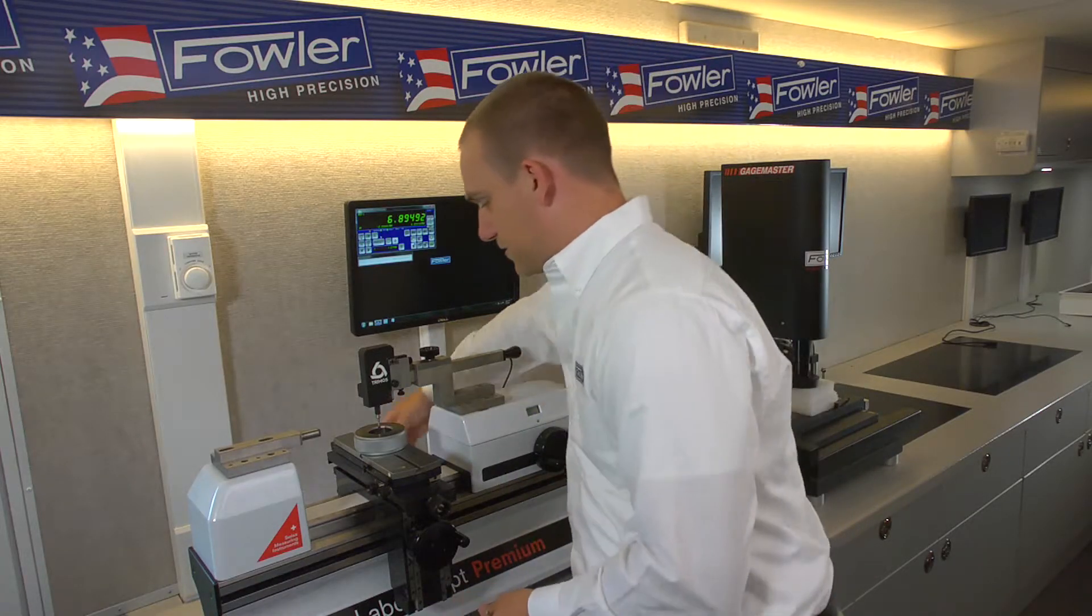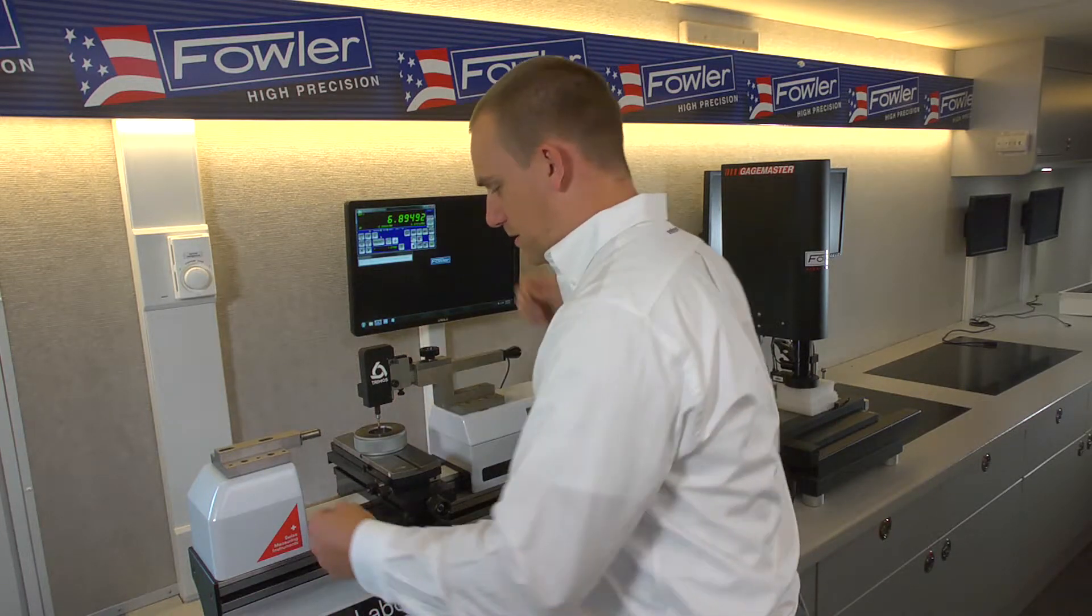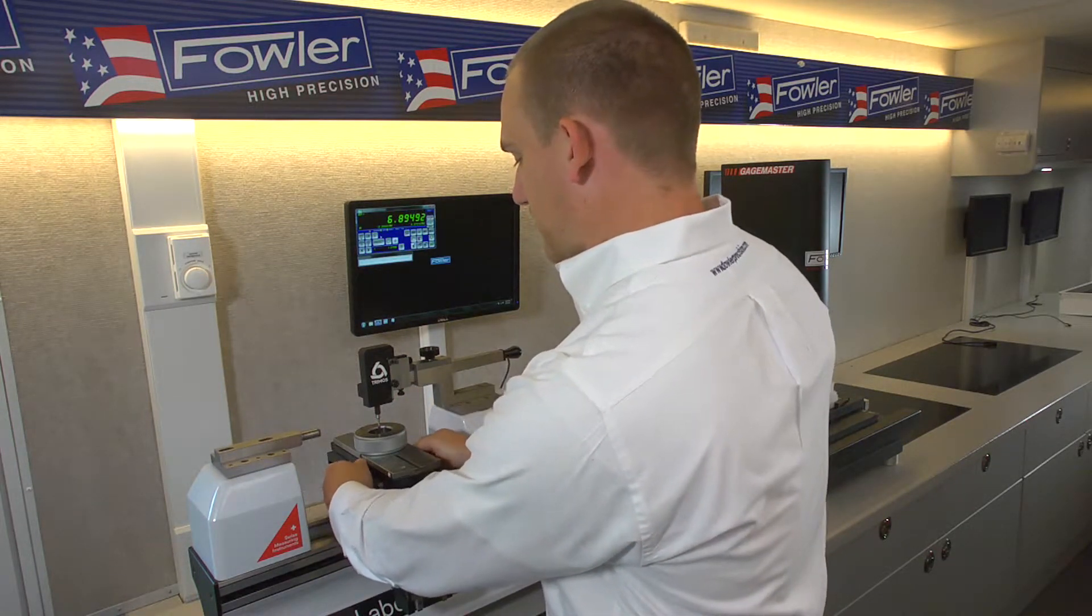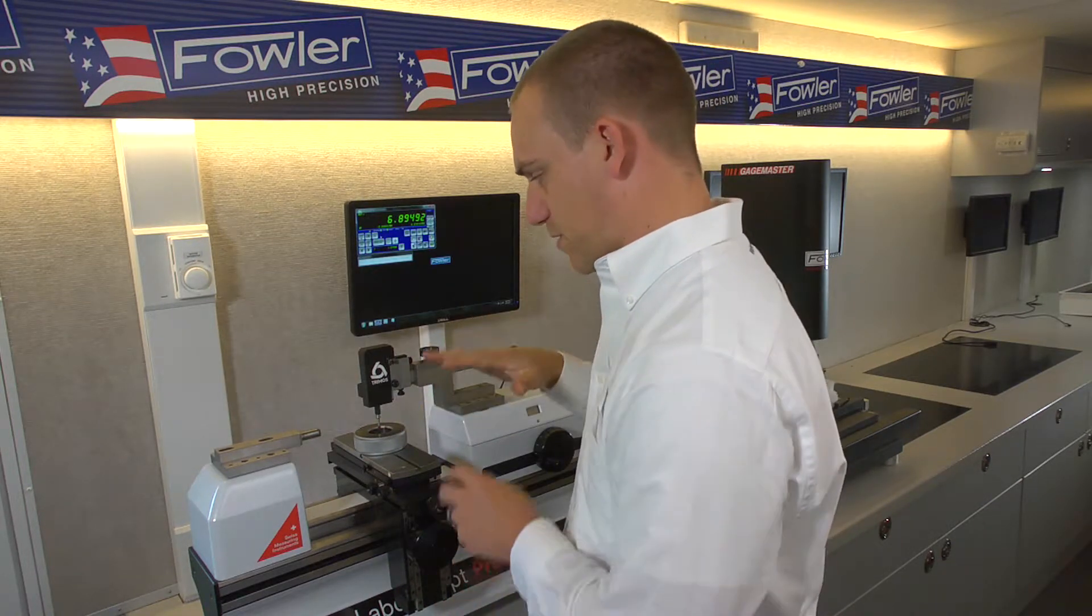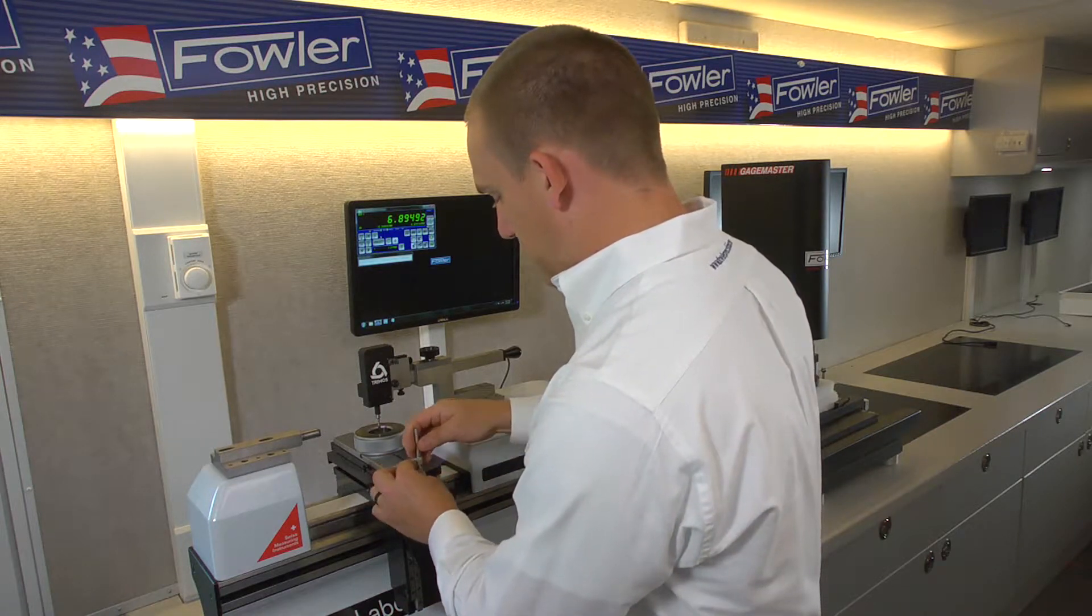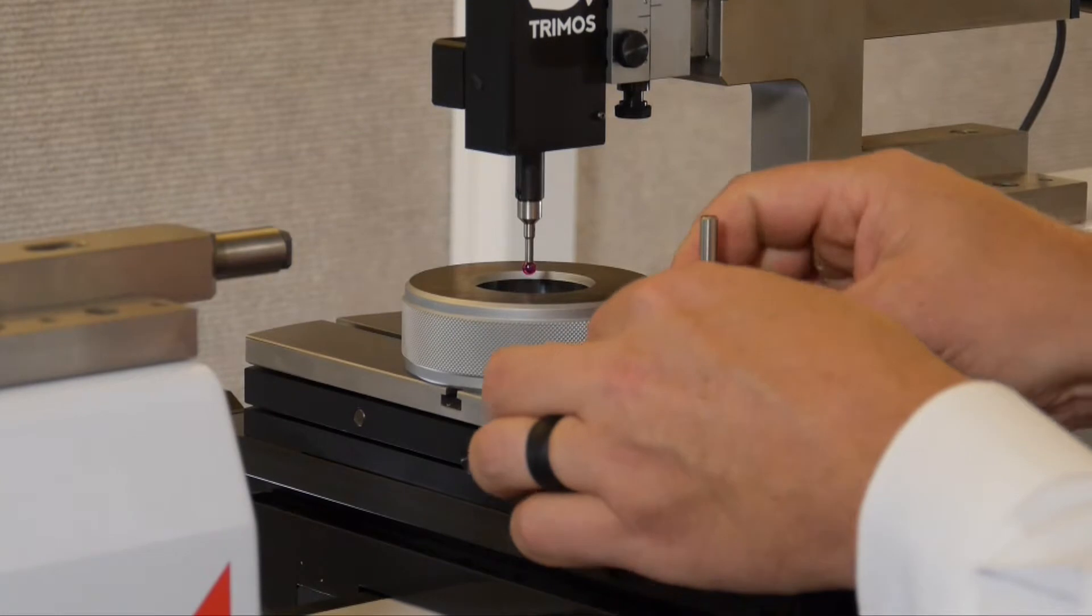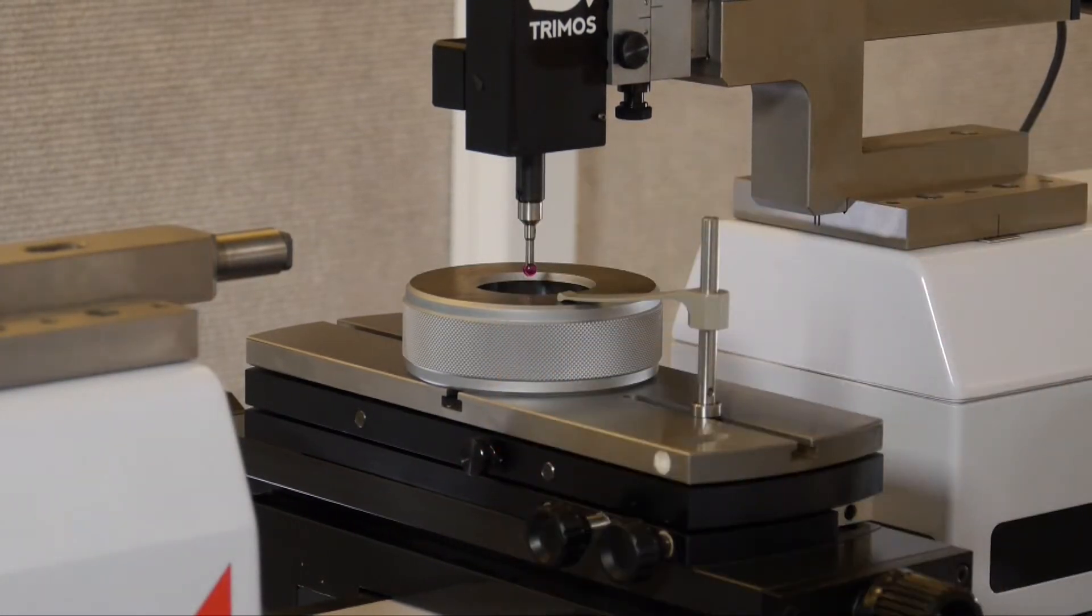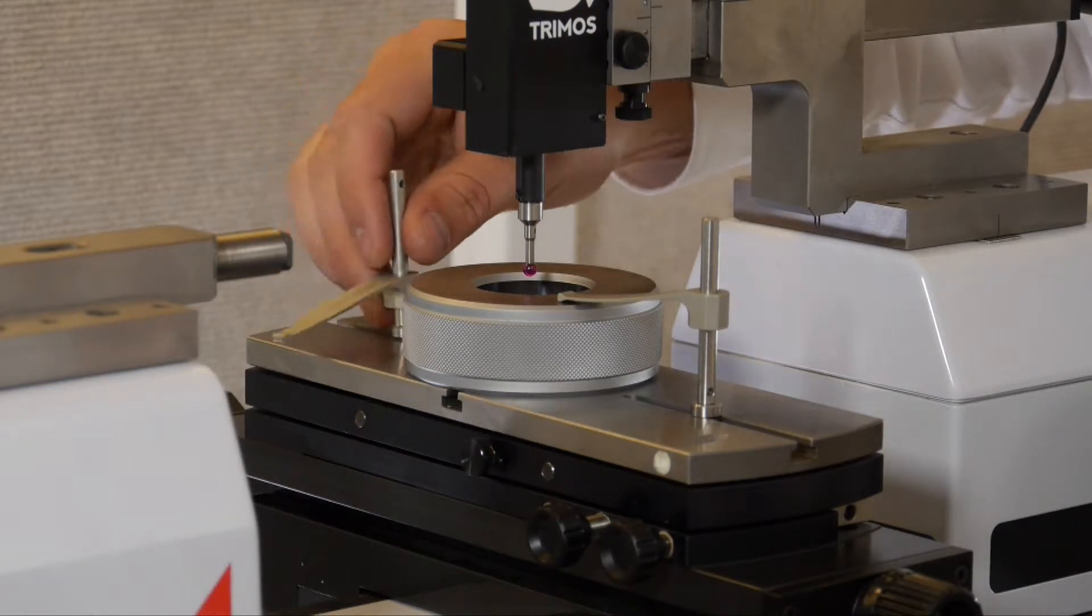First we want to make sure that our table is locked in place using these two knobs on the back. We want to make sure these side set screws are locked down because we don't want the table to move. We want our left measurement and our right measurement to be very solid. And we will lock the ring down to the table using some quick clamps, one in the front and another in the back.